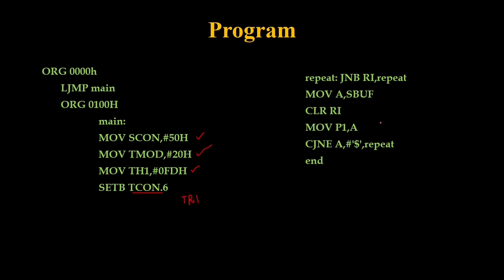After initialization, I am going to receive data from my keyboard. I check the RI flag repeatedly. When the RI flag gets enabled, it means receiving is completed. After receiving is completed, I move that value into the accumulator, then clear RI so it is ready for the next operation. The value of A is pushed into Port 1 so I can view the output. I then check whether the accumulator value is equal to the dollar symbol.